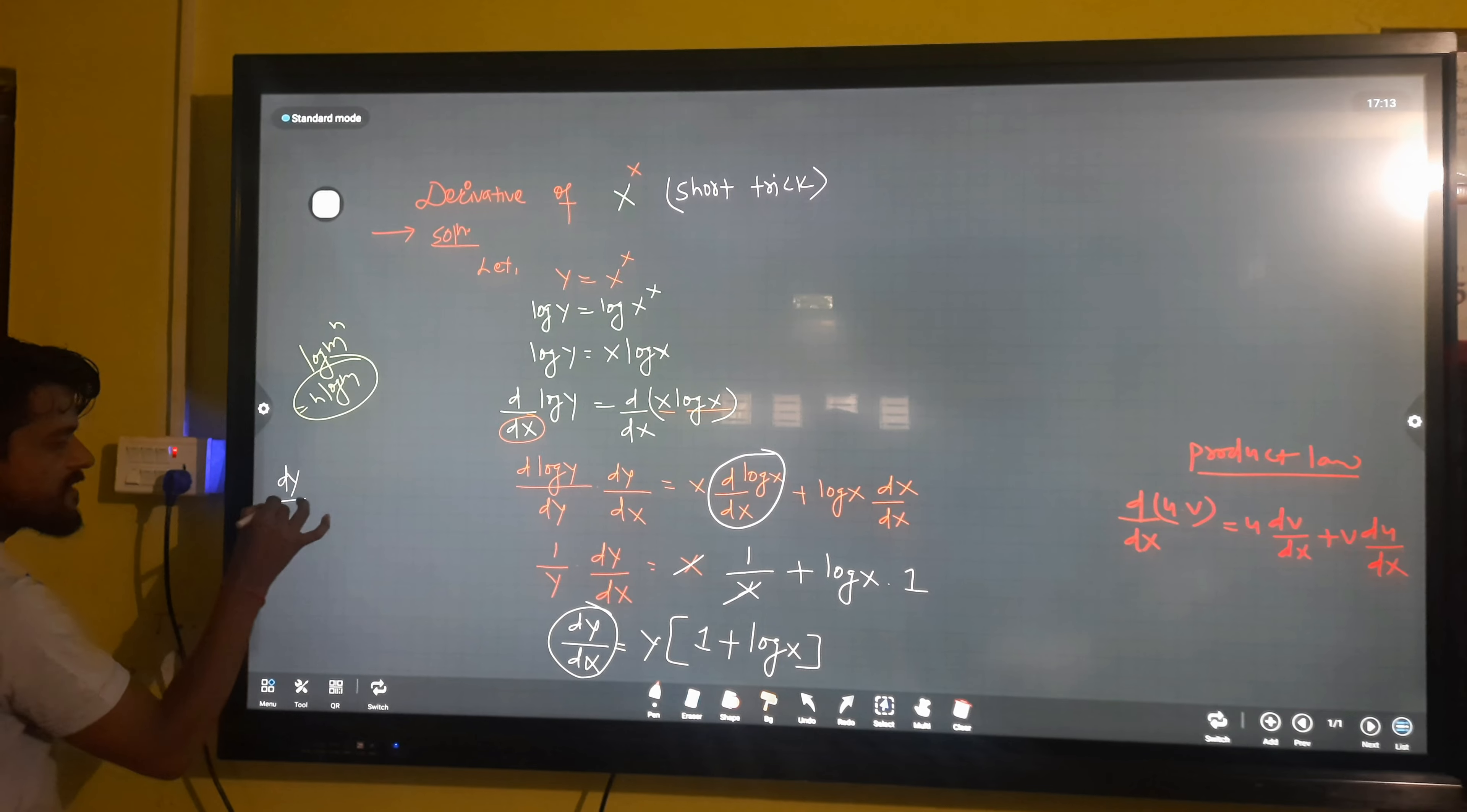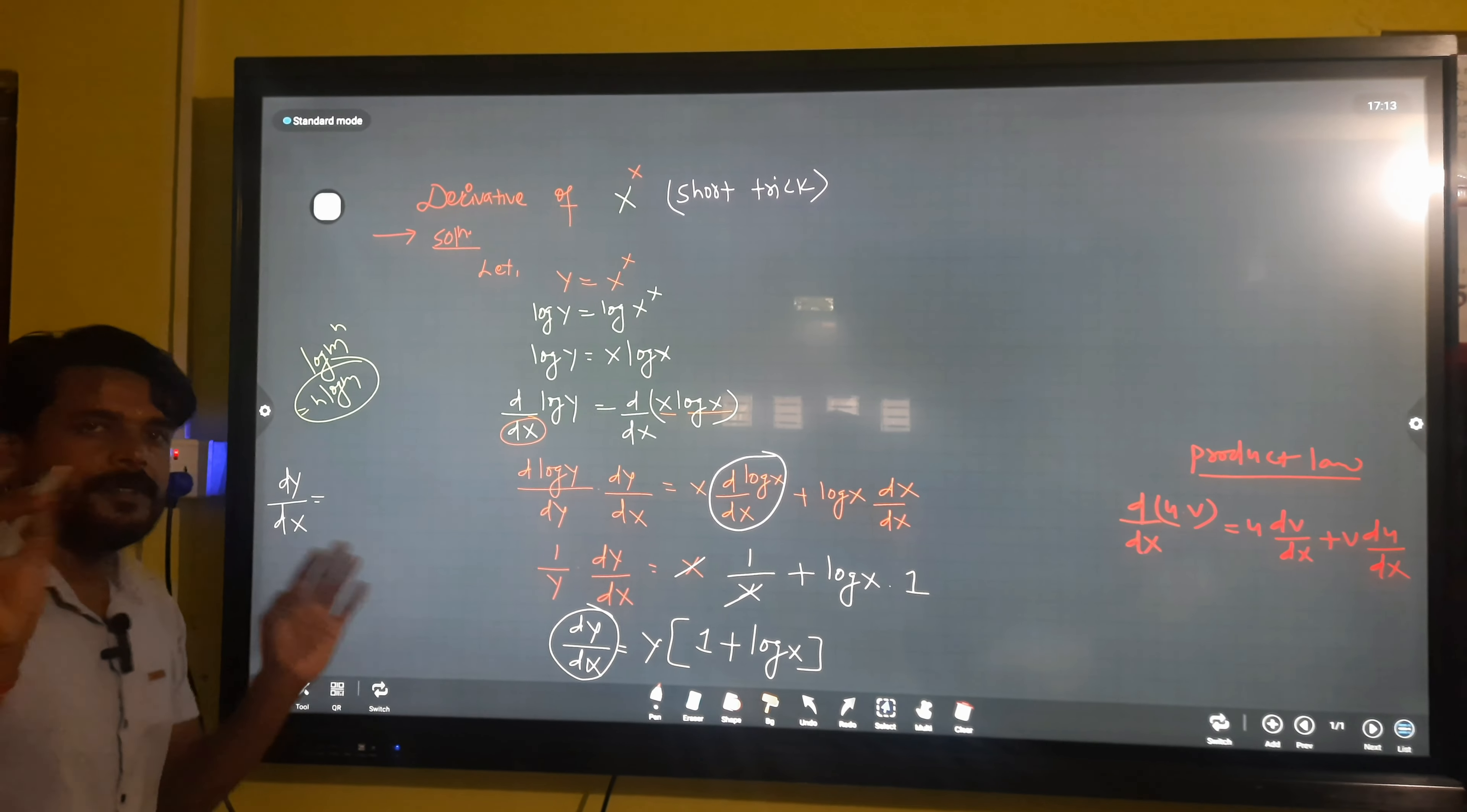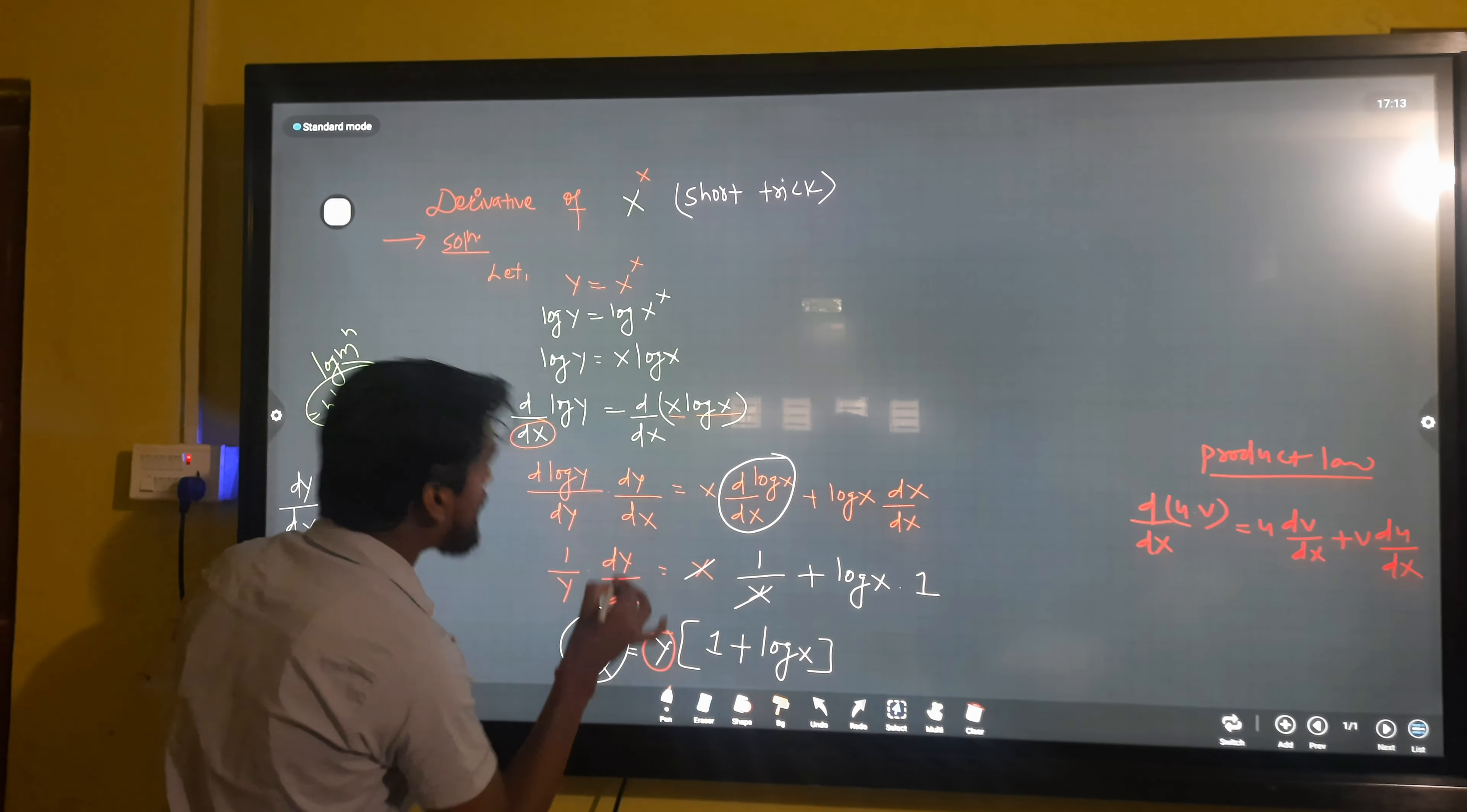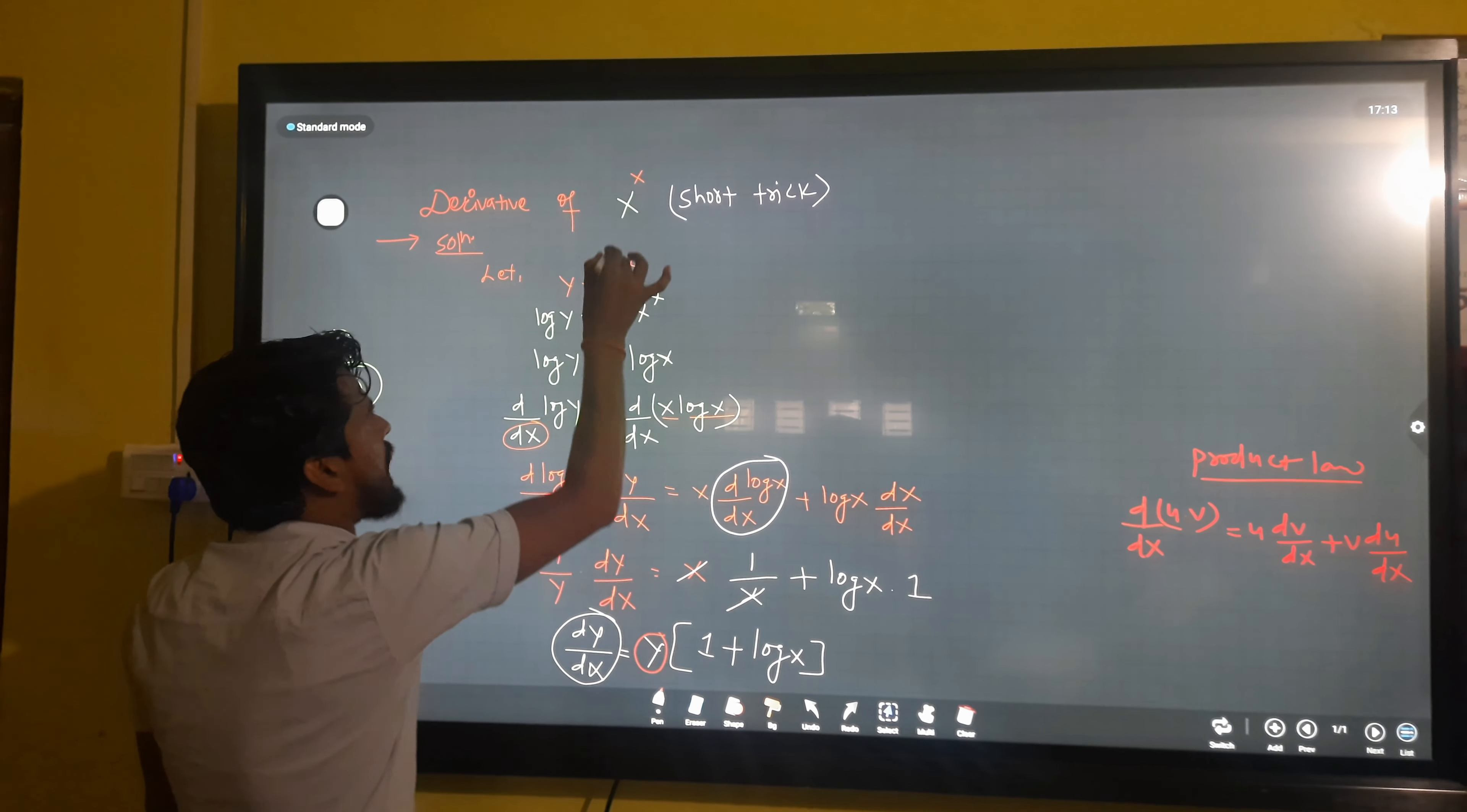dy by dx can be written as y times this. Now substitute the value of y. We defined y as x to the power x, so replace y with x to the power x.